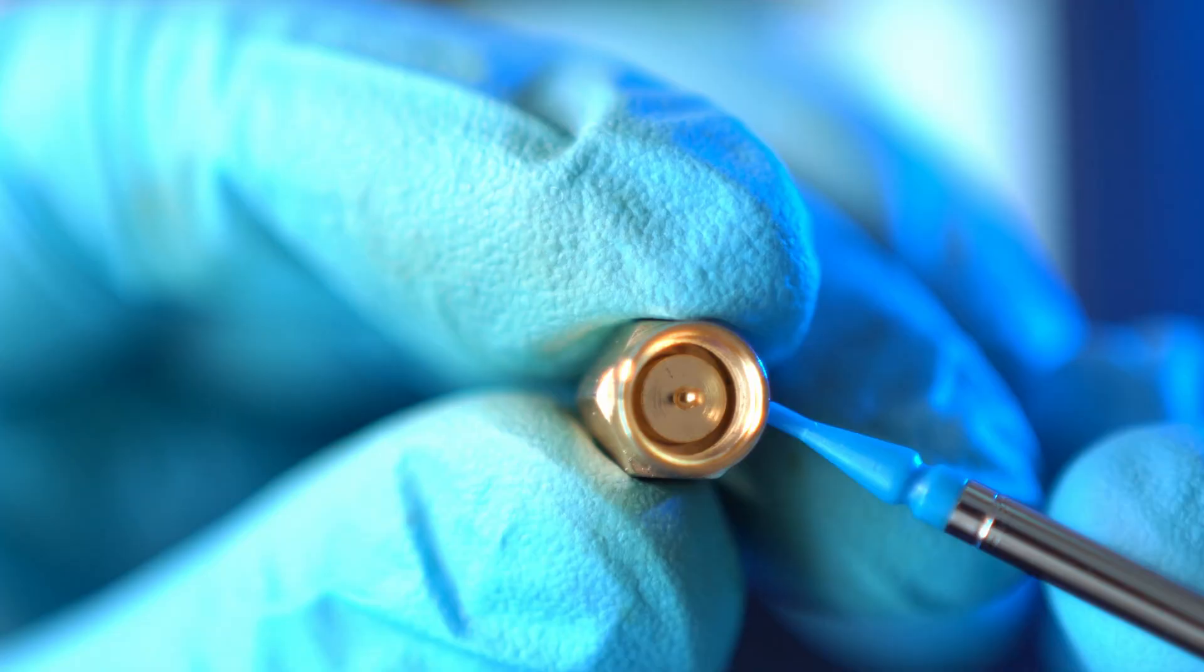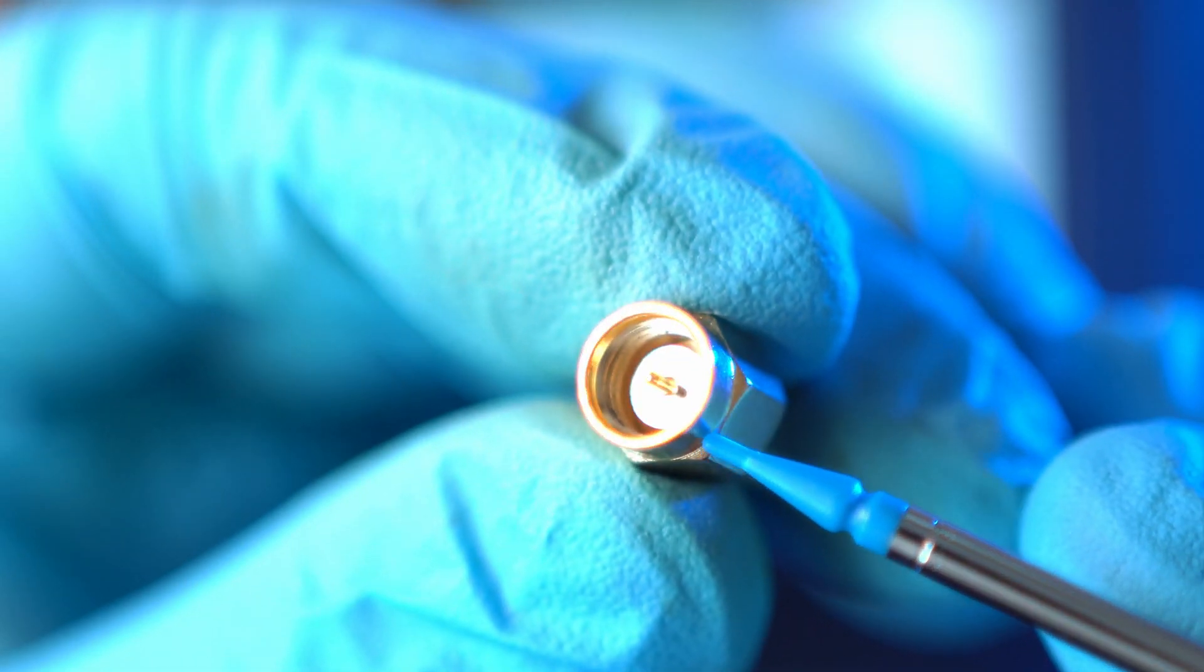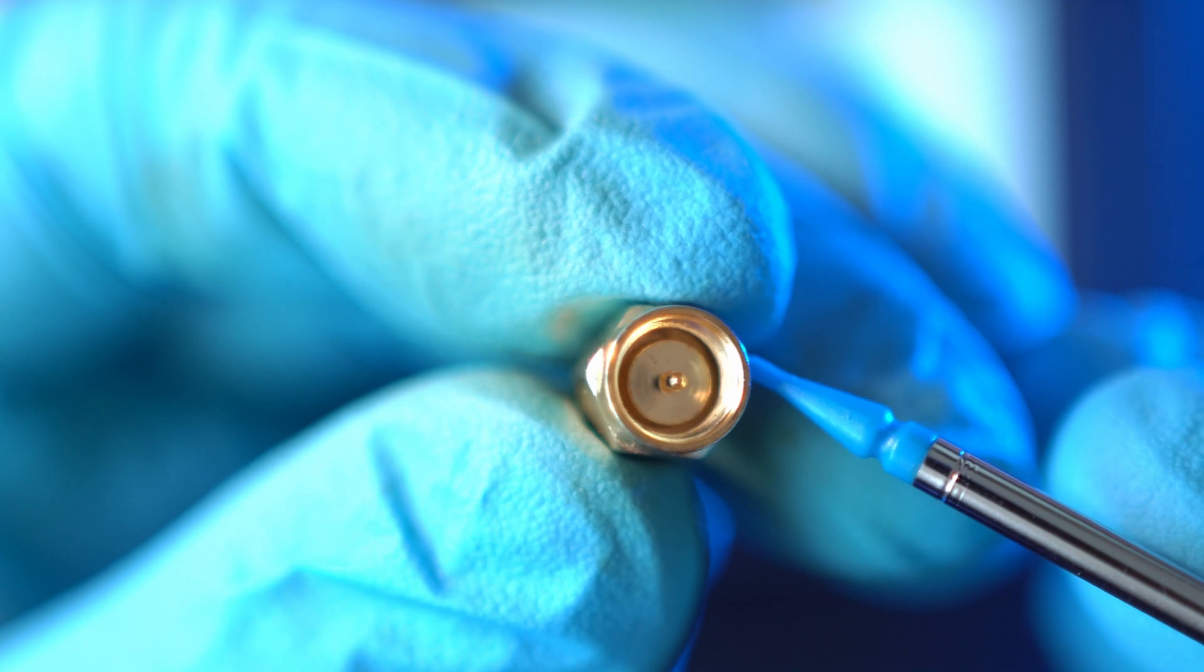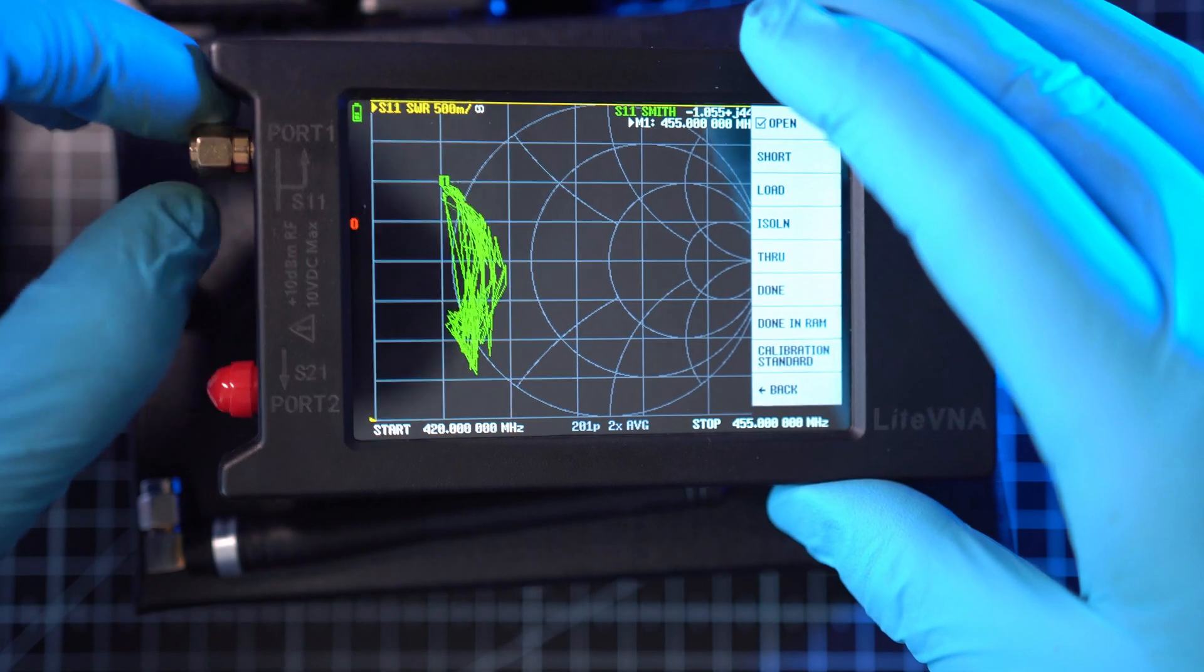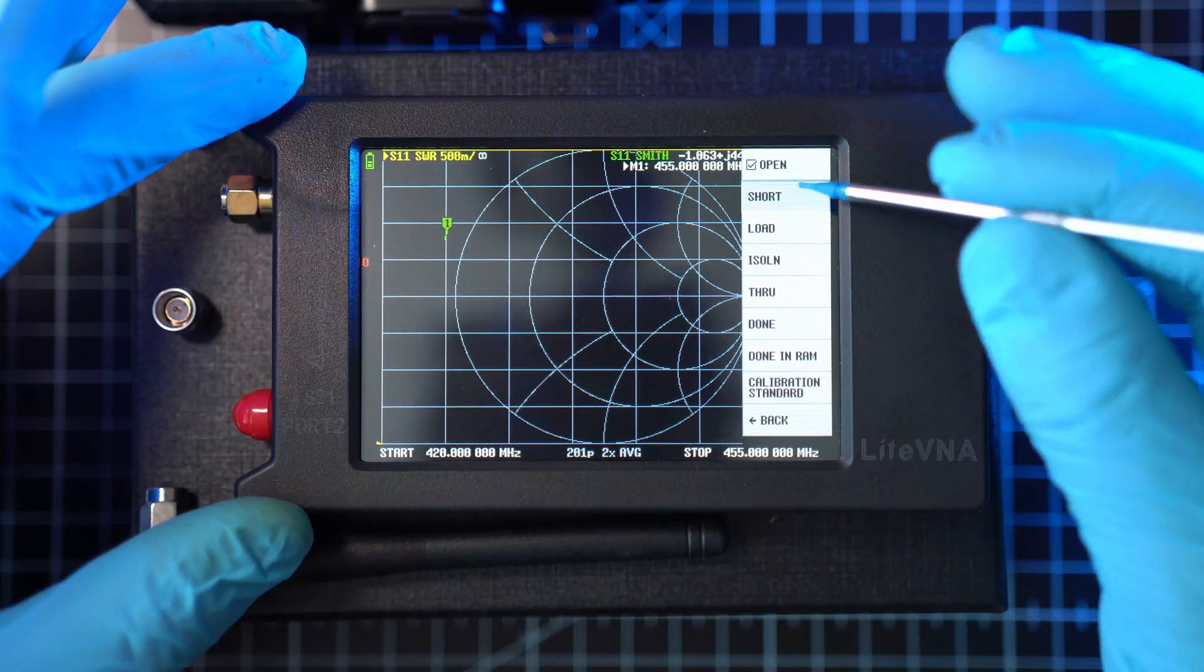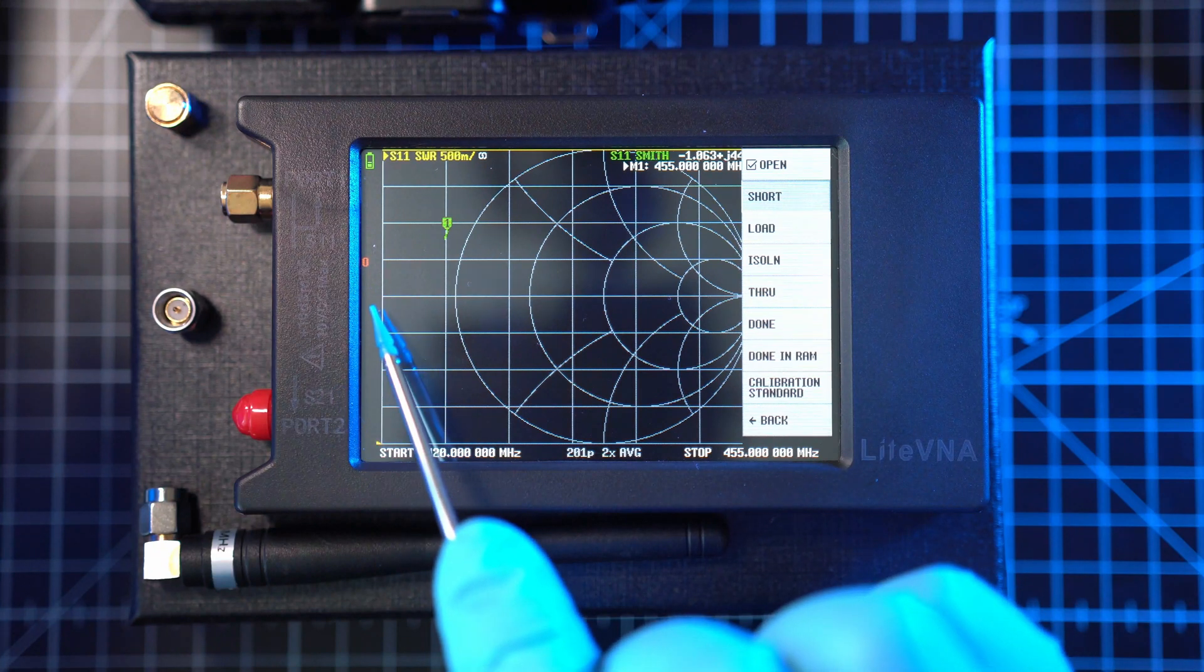Now change the plug to short. This one has a core pin that is shorted to the shield or ground. Screw it on and hit short. Wait a bit and letter S appears.